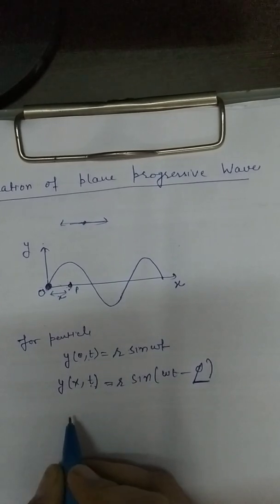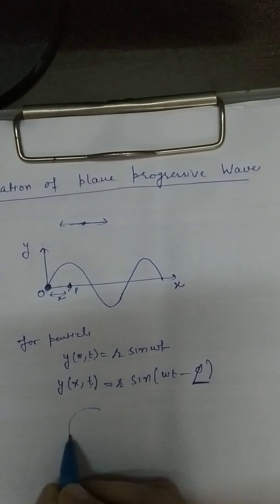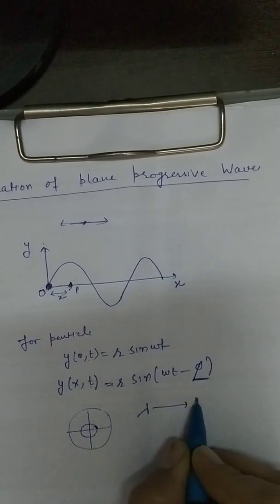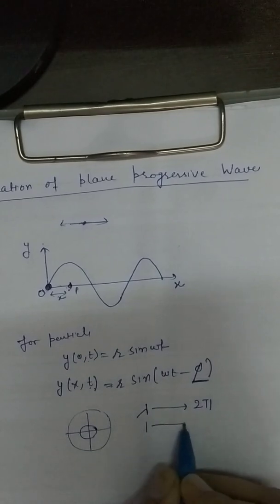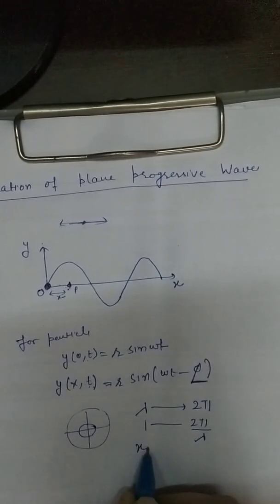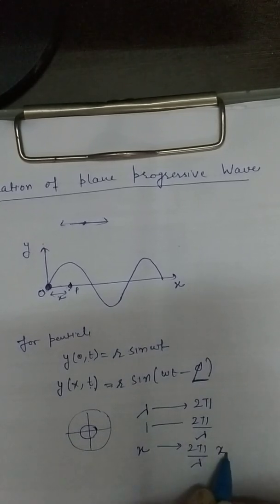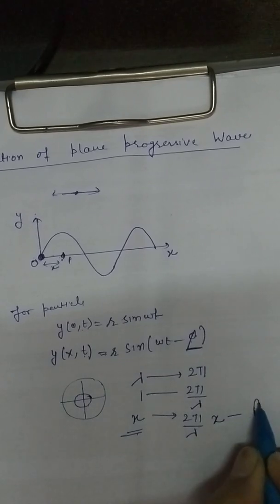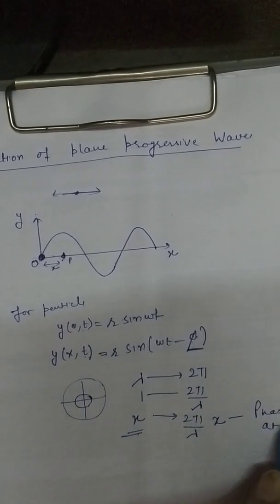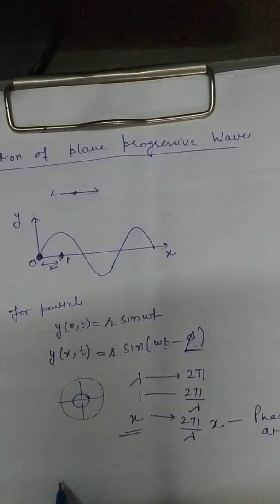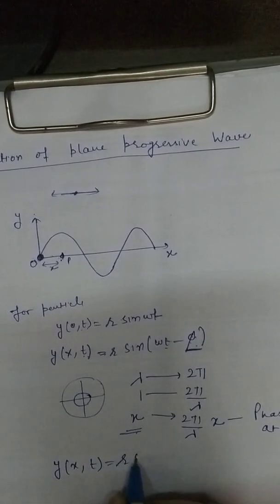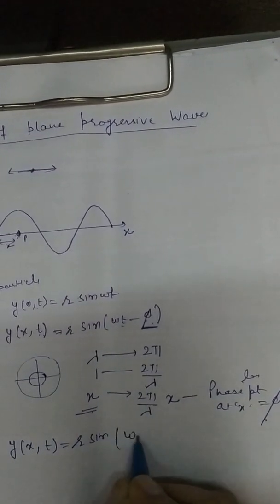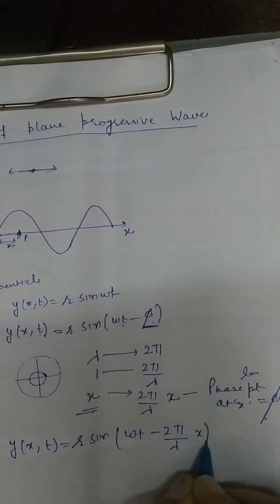To find φ, we use the fact that corresponding to one complete wavelength (λ), the phase is 2π. So corresponding to unit distance, the phase is 2π/λ. When the wave covers distance x, the phase is (2π/λ)·x. This is the phase lag at point x. So y(x,t) = r sin(ωt − (2π/λ)·x).